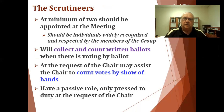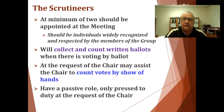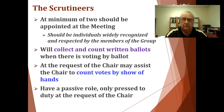The scrutineers are two individuals that are appointed. They have the respect of the floor and are widely recognized by members as impartial individuals. They will collect and count written ballots when voting is by ballot, and at the request of the chair, they may assist by counting votes when people are showing their vote by show of hands. It's a passive role — only pressed to duty at the request of the chair. You appoint the scrutineers at the beginning of the meeting.